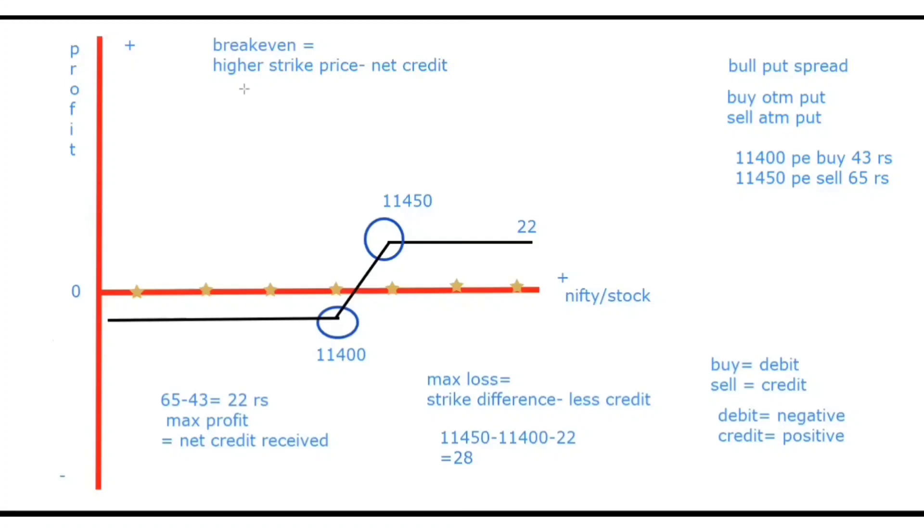And now what is the breakeven of this strategy? The breakeven would be higher strike price minus the net credit. So what is the breakeven? 11,450 minus 22 which gives 11,428. Toh yeh joh line hai isko apan bolenghe 11,428. This point would be 11,428. Nifty agar left side gaya 11,428 ke, then we would incur loss. And right side gaya 4,28 ke, toh apan ko profit ho ga.